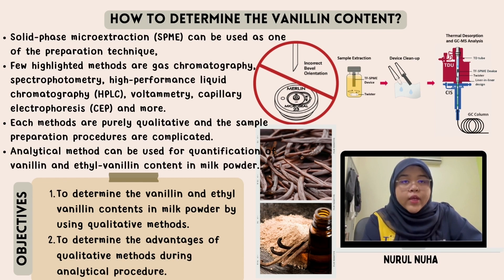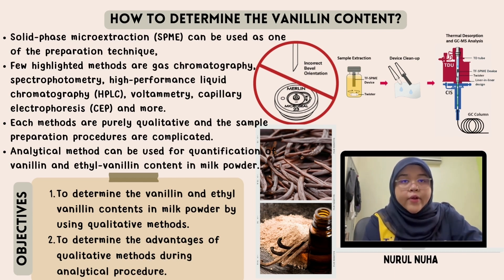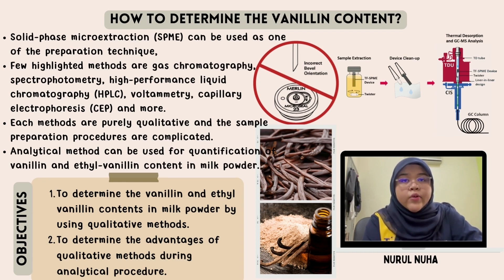This method was purely qualitative and no attempts at quantification were reported. Each of the methods has drawbacks, and there is no quantitative determination of vanillin or ethyl vanillin reported in milk powder. These methods have low recovery and require a large amount of organic solvent in extraction, and the sample preparation procedures are complicated. Low sensitivity and selectivity of these methods could easily lead to false positive results. This study developed a promising method for the sampling of complex mixtures, where complicated matrix interference was eliminated due to the selectivity of extraction materials, thus avoiding false positive results.